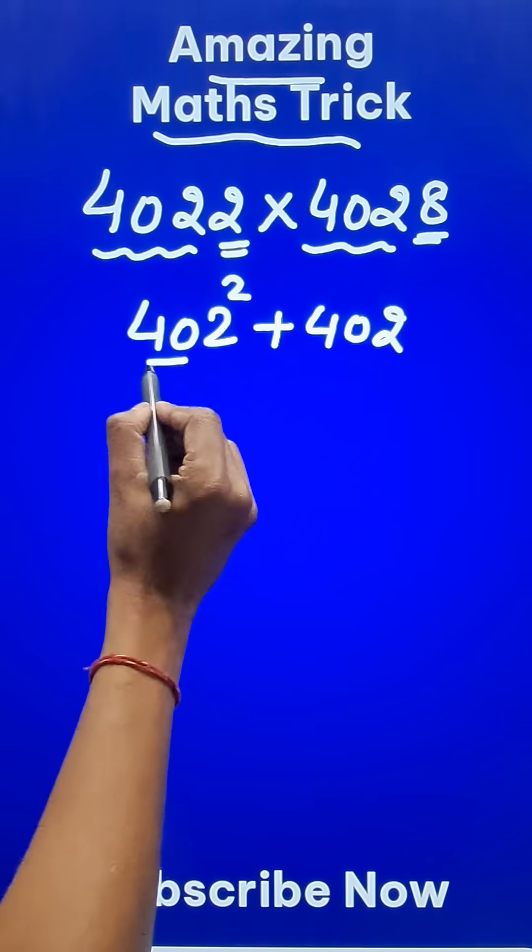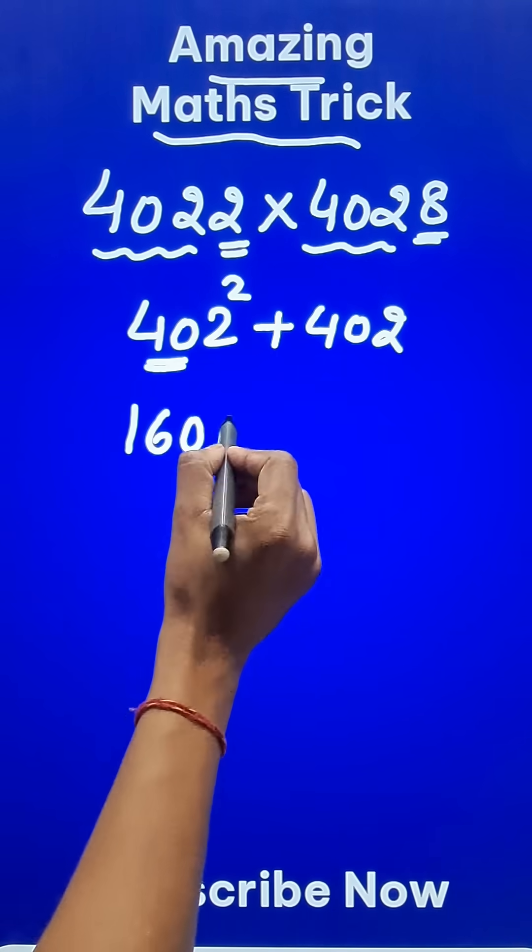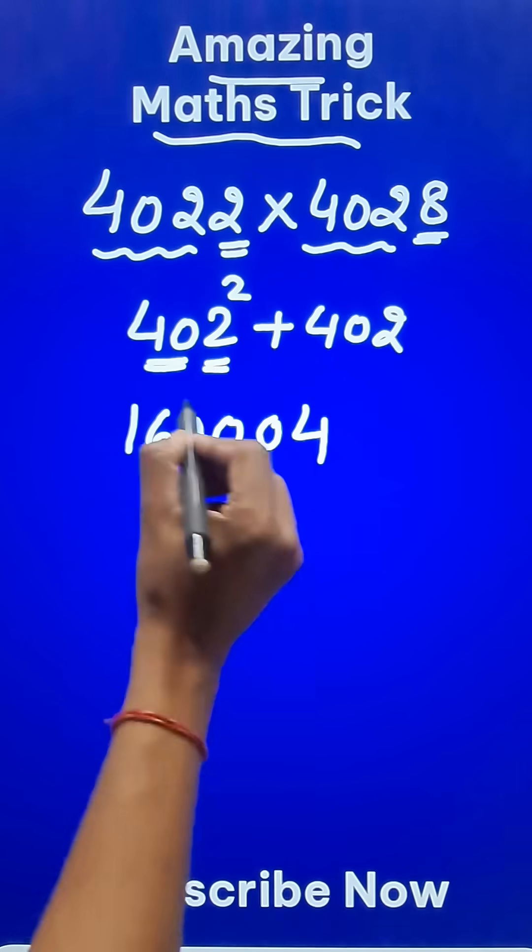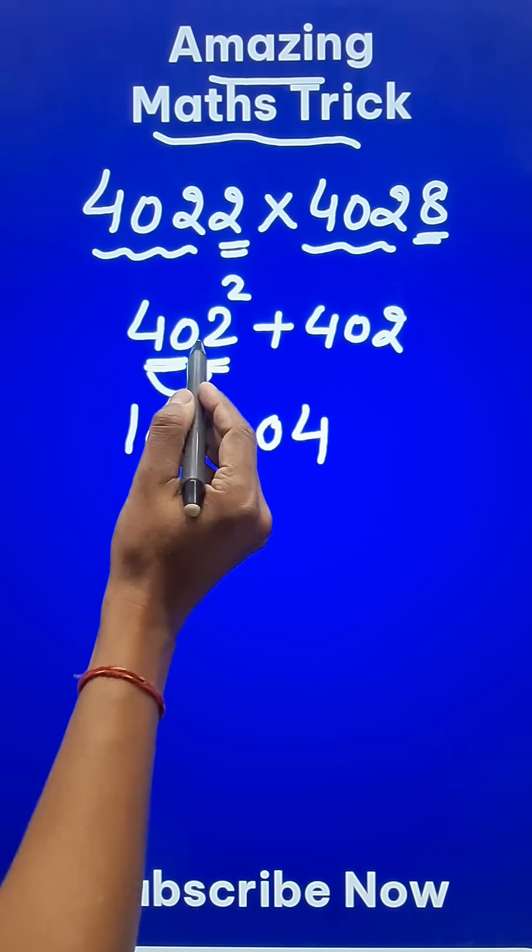Now how do you square 402? 40 square is 1600 and 2 square is 4, so I will write it as 04. Then 40 into 2 is 80 and double of 80 is 160.